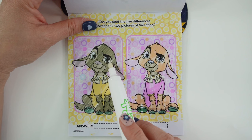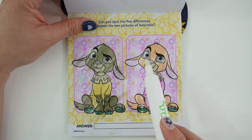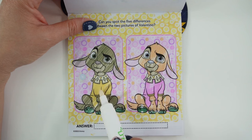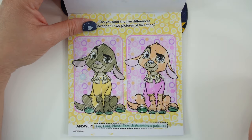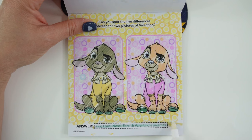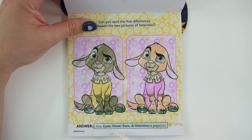His water color is different. This one is yellow, and this one is purple. And his ears are different. One is a dark pink, one is a light pink. All right, did we get it right? Fur, eyes, nose, ears, and Valentino's pajamas.